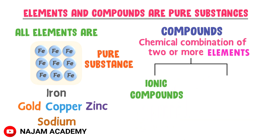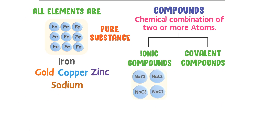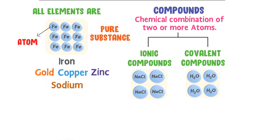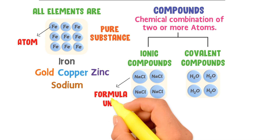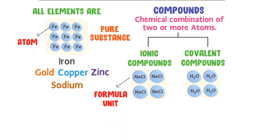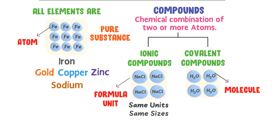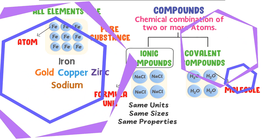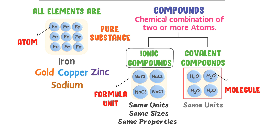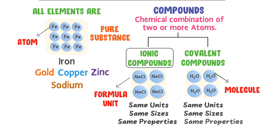Compounds are formed from the chemical combination of two or more elements. There are two types: ionic compounds and covalent compounds. The smallest unit of ionic compounds is a formula unit, and the smallest unit of covalent compounds is a molecule. In table salt (NaCl), all formula units are identical with the same sizes and properties, so all ionic compounds are pure substances. Similarly, in water (H₂O), all molecules are identical, so all covalent compounds are pure substances.